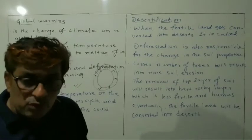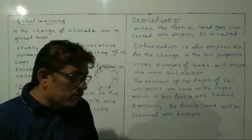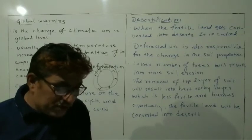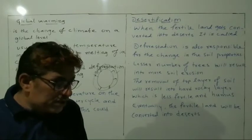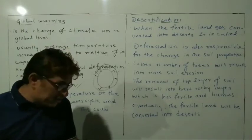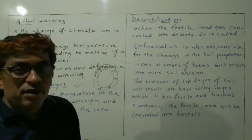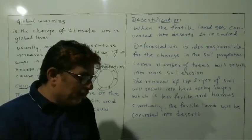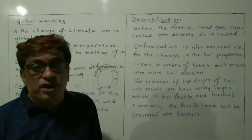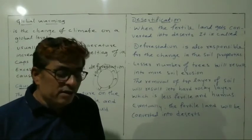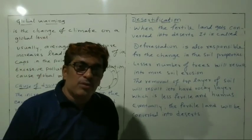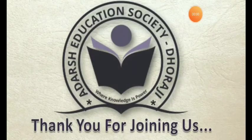So dear students, today you learned: deforestation and its causes, the consequences of deforestation, what is global warming, what are droughts, and what is desertification. These are the important definitions. In the next video, we will discuss conservation of forests and wildlife, and biosphere. Thank you, bye-bye. Thank you for joining us.